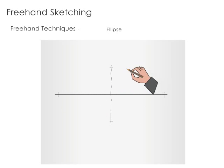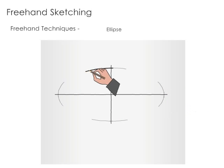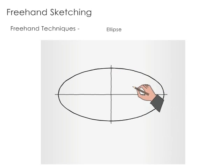Another method to draw an ellipse is to start with sketching the major and minor axes. Then draw a smooth ellipse through the end points of the axes.